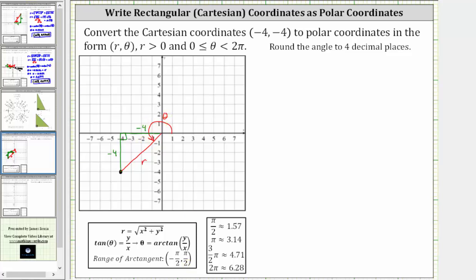Let's begin by determining r, where again, r is equal to the square root of the quantity x squared plus y squared. Or in our case, r is equal to the square root of the square of negative four plus the square of negative four.